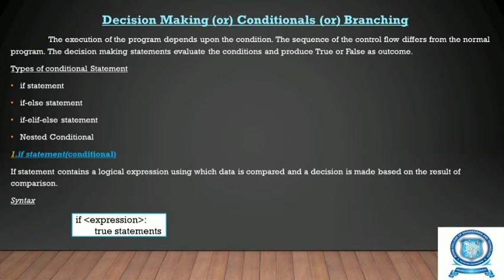These statements are called as decision making statements or branching statements. We have to evaluate the condition and based upon the result of the condition we have to branch the statements. Evaluating the condition will produce true or false as an outcome, and based on that we will execute the set of statements. Types of conditional statements are: the if statement, if-else statement, elif statement, and nested conditional statements.